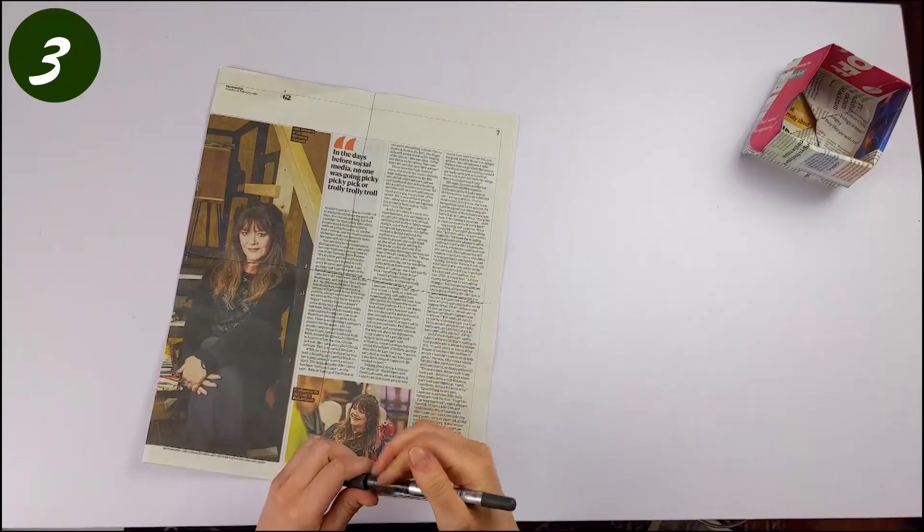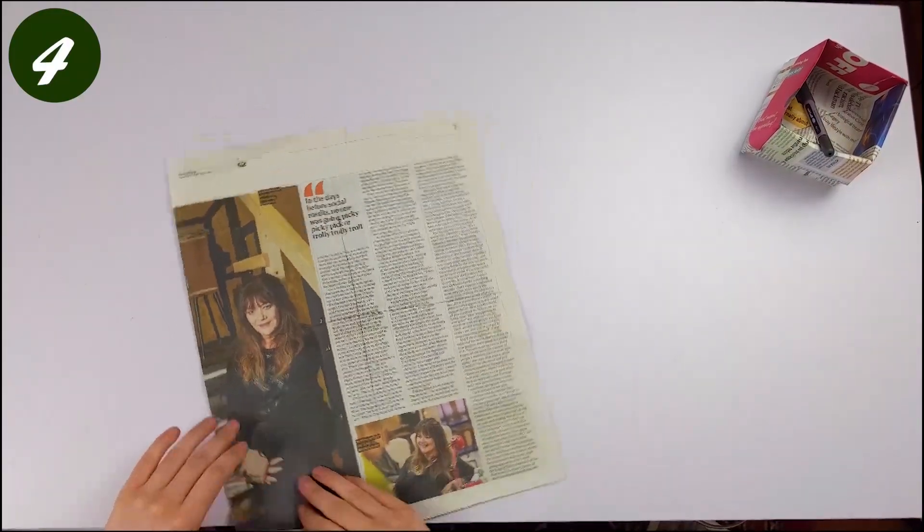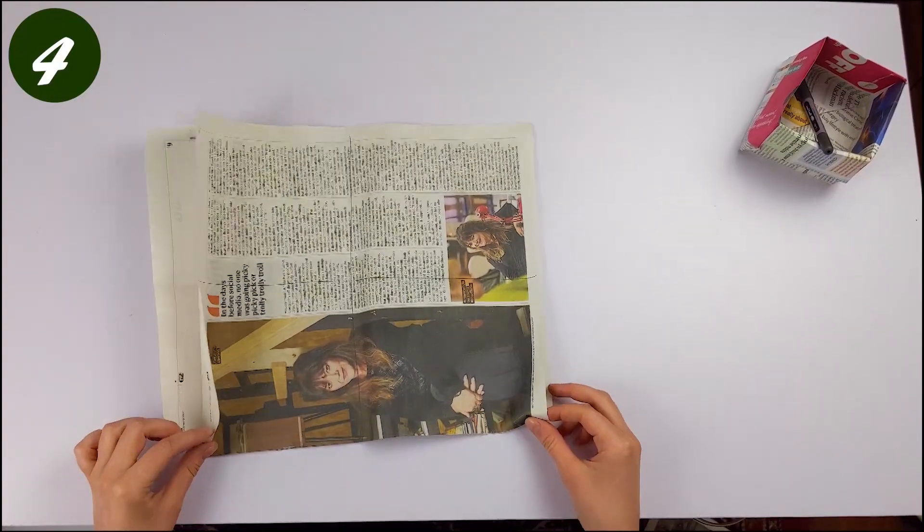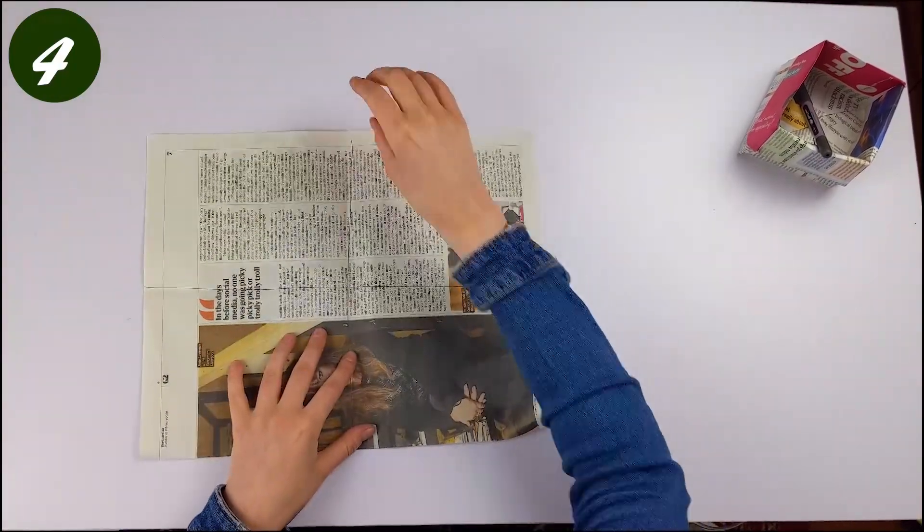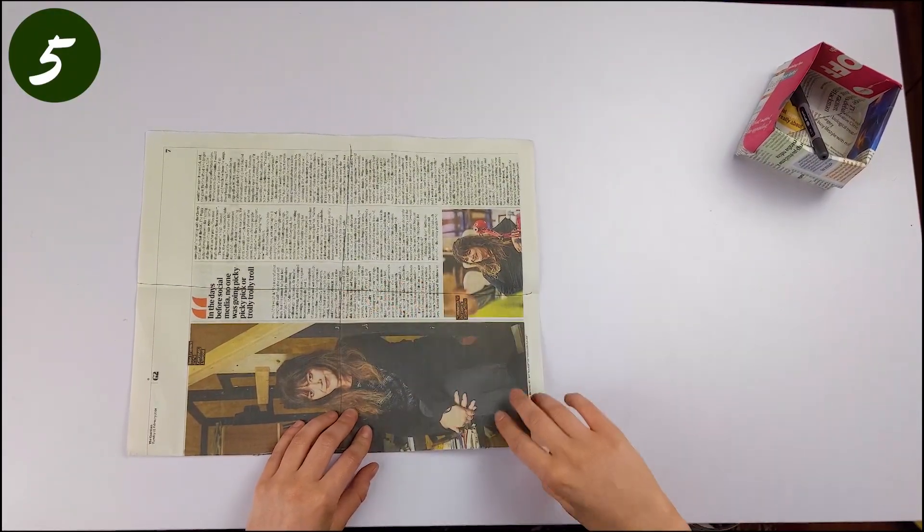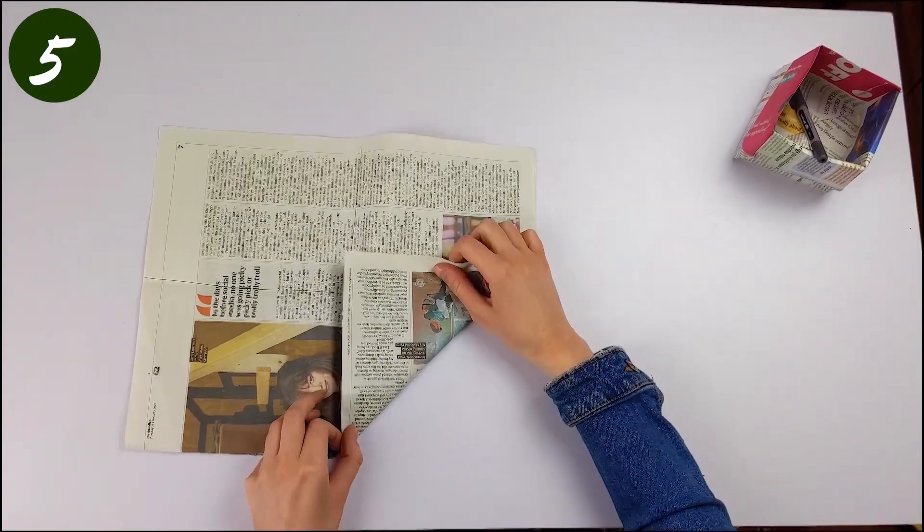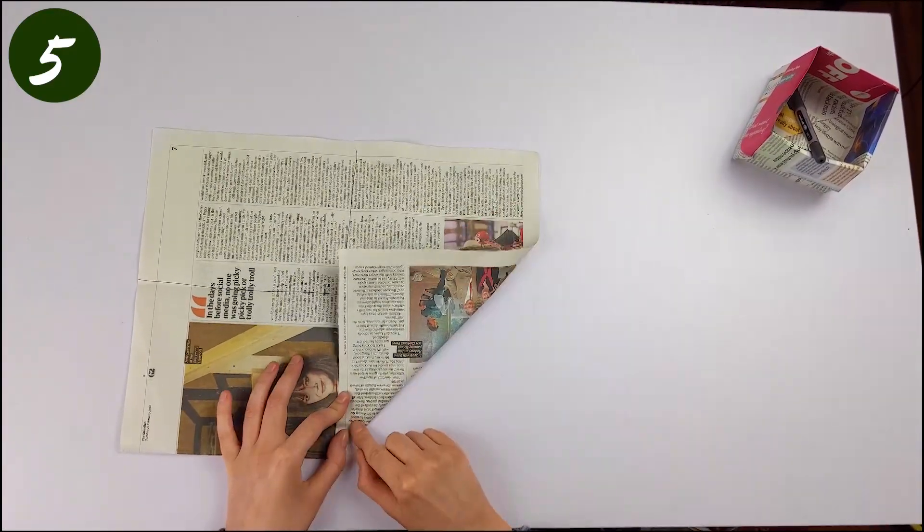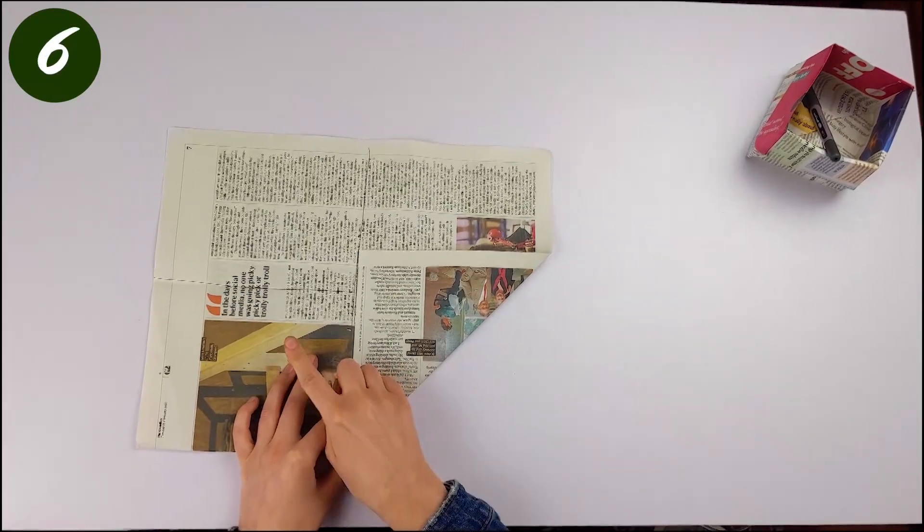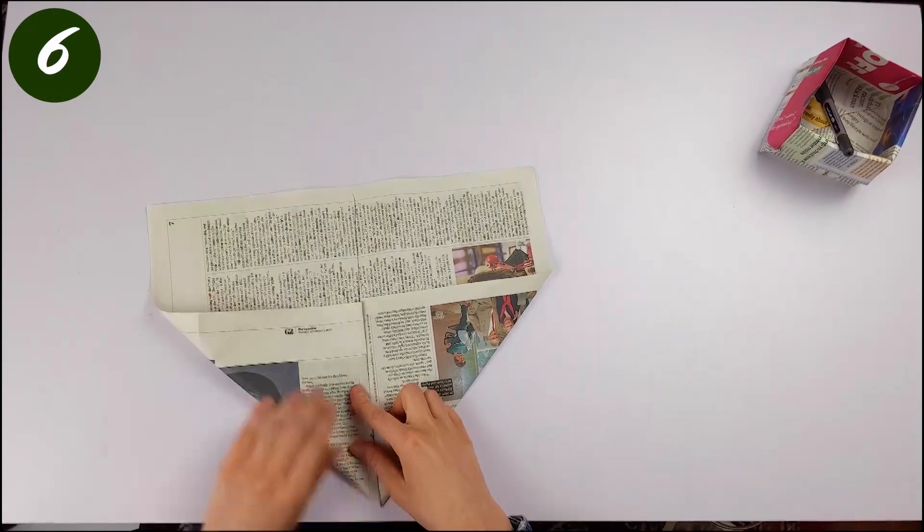There you go that's your cross. Then flip the bit of paper on its side so you've got the bit of paper that's attached towards your body and the loose part away from your body. Take this corner and bring it up to meet the cross or you know as close as you can possibly get it. Firm that up and do the same on the other side and then firm that side up too.